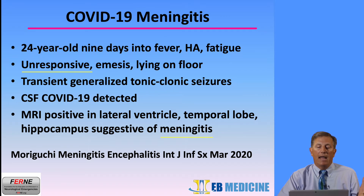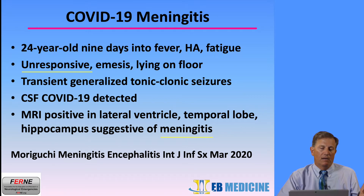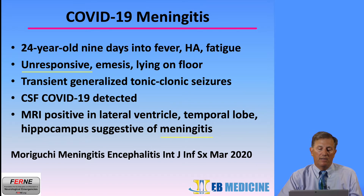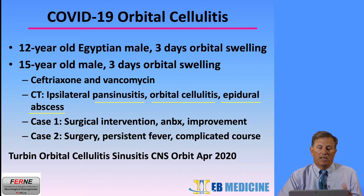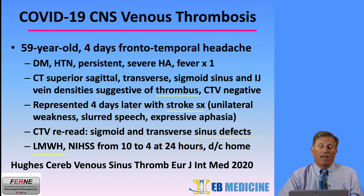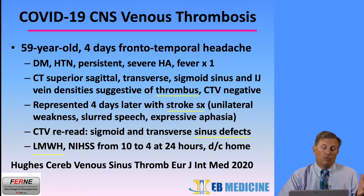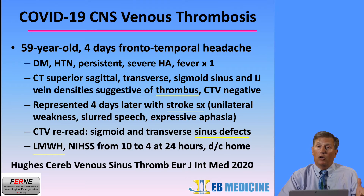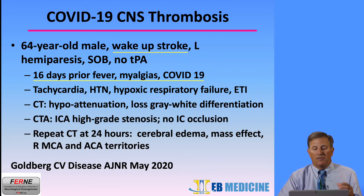One case involves a young man with nine days of fever, headache, and fatigue who was found unresponsive with emesis, and imaging showed suggestion of meningitis in the hippocampus and temporal lobe. Another case involves two young children with orbital cellulitis and pansinusitis, both requiring surgical intervention. CNS venous thrombosis can also occur, with stroke symptoms, sinus involvement, and treatment with low molecular weight heparin. One case is a 64-year-old male with a wake-up stroke who had COVID symptoms including fever and myalgias 16 days prior, along with arterial thrombosis.